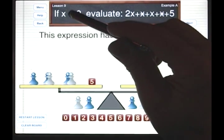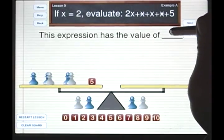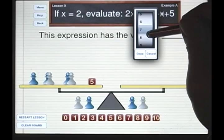We're told that x is equal to 2. x is the blue pawn. 2 and 5 is 7. So the value of this expression therefore is 7.